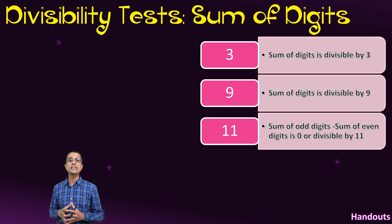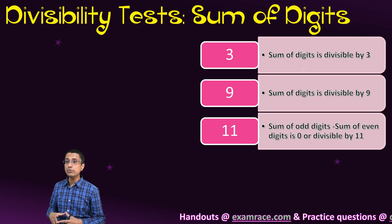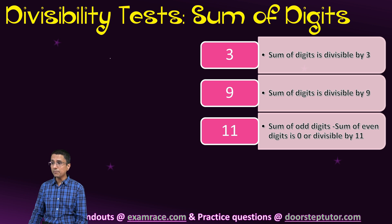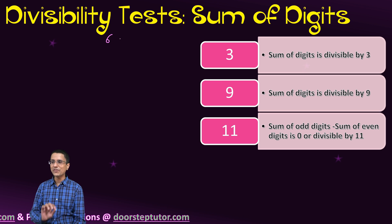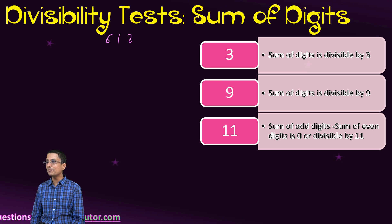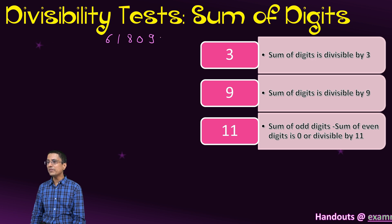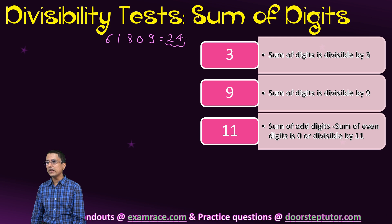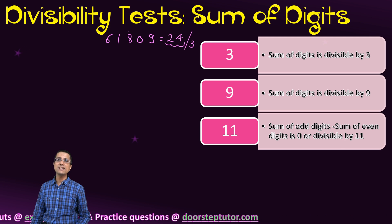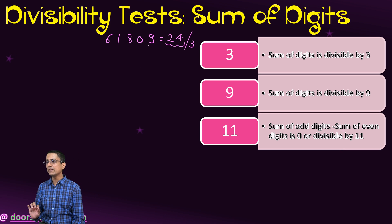The next kinds of divisibility tests are those where we have to find the sum of the digits. For example, let us look at the number 61809. The sum of the digits of this number, if I add all the digits, comes out to be 24. Because 24 is divisible by 3, the number itself is actually divisible by 3. So if the sum of digits is divisible by 3, the number is divisible by 3.